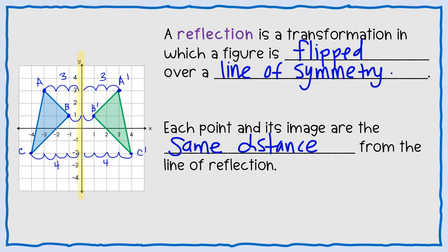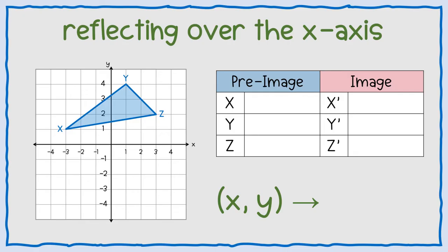Okay, so let's look at some examples. Let's start with: what if I wanted to reflect over the x-axis? So let's start by filling in this table with the pre-image. Our pre-image is there in blue — X, Y, Z. X is at the point negative three, positive one. Y is at the point one, four. And Z is at the point three, two.